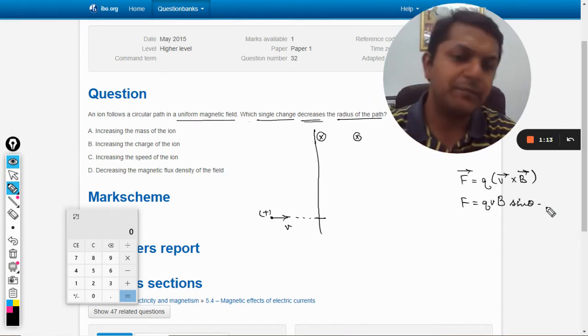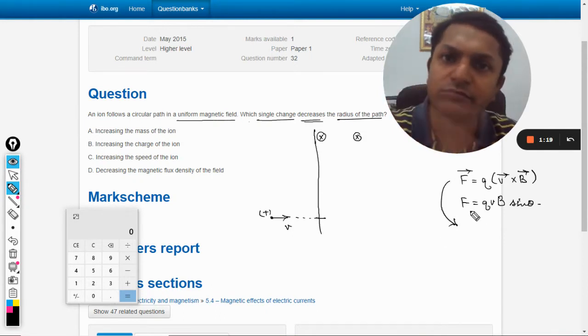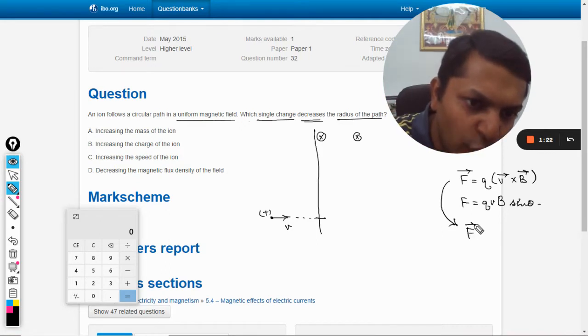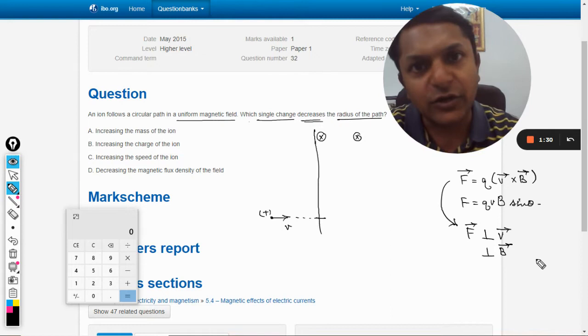So from this vector equation, one thing is evident: the force vector will be perpendicular to velocity and perpendicular to the magnetic field vector, because that is the property of cross product in vectors.